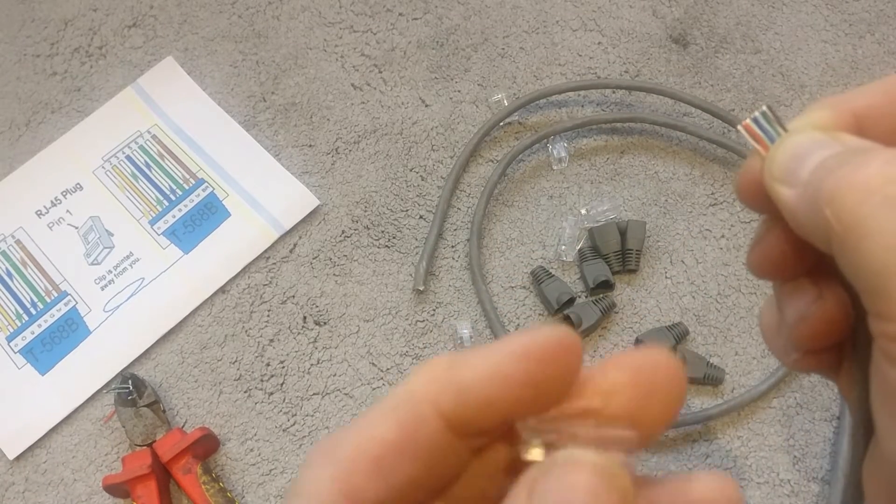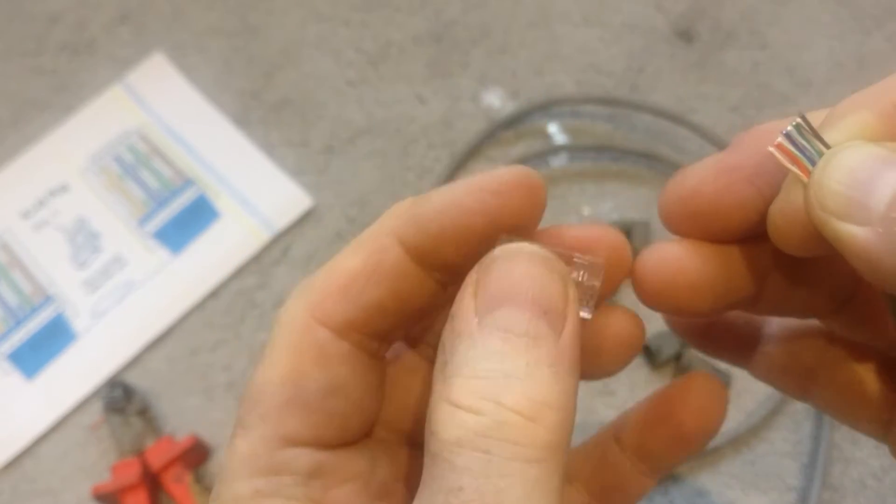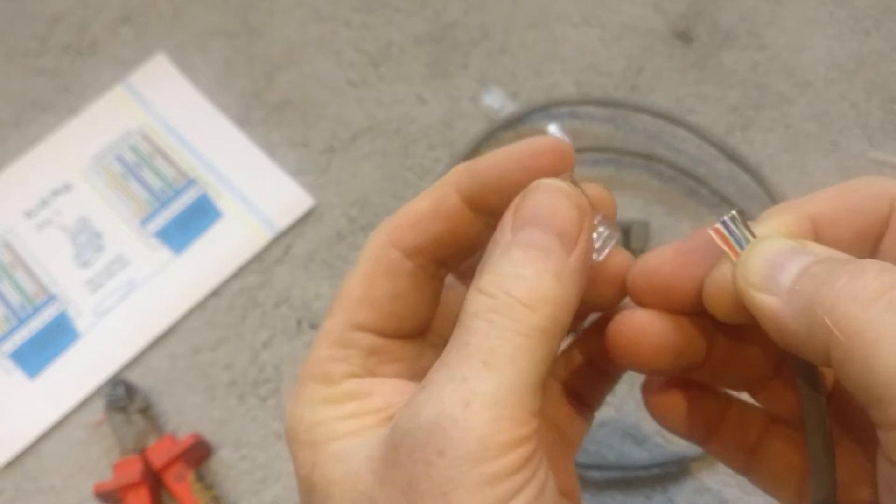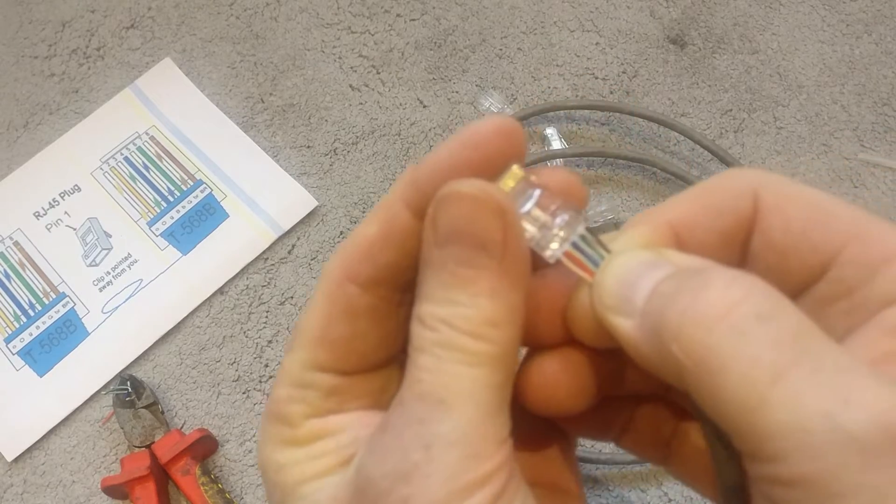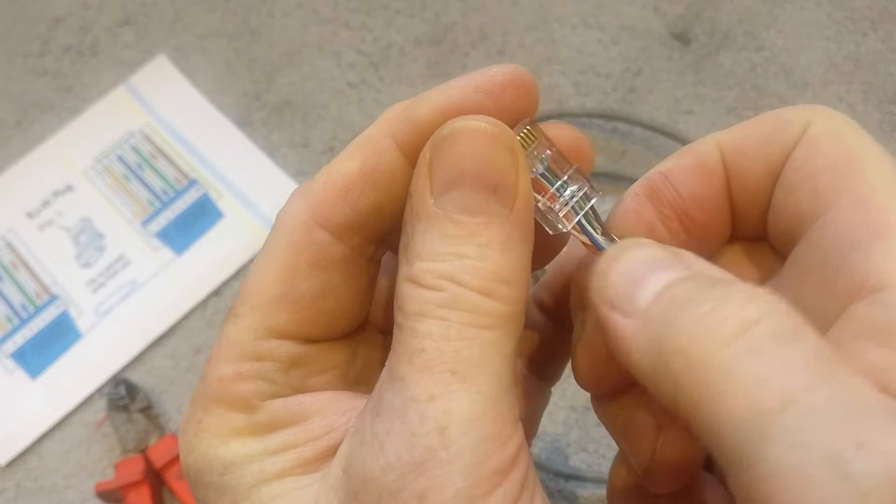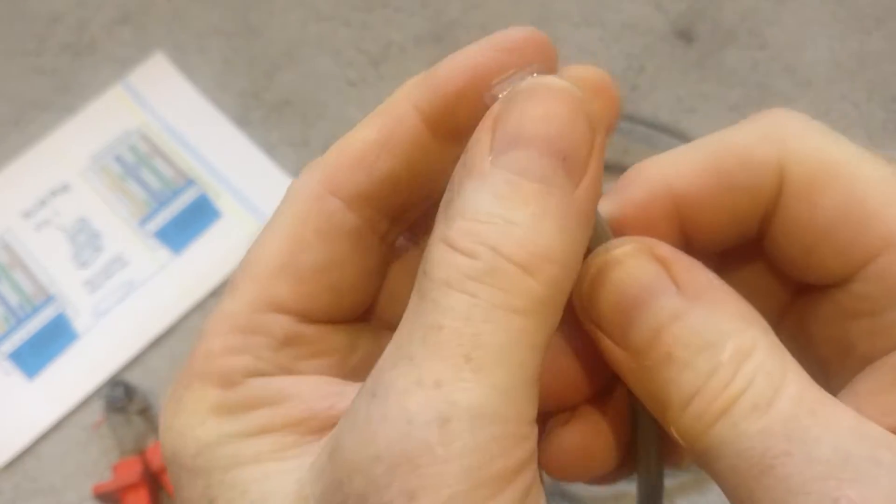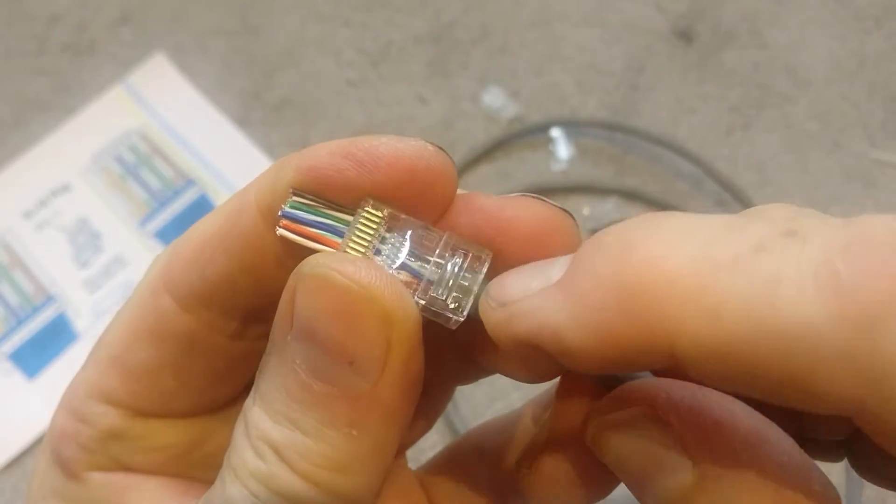Then grab yourself a pass-through connector. Now hold the pass-through connector so that the little toggle on the end there, which you can just see, the plastic toggle, is underneath. That means pin one is the top left. All you do is just push that in there, gently push them through, and then they'll come out of the holes at the end. Push it through so that you can see there.